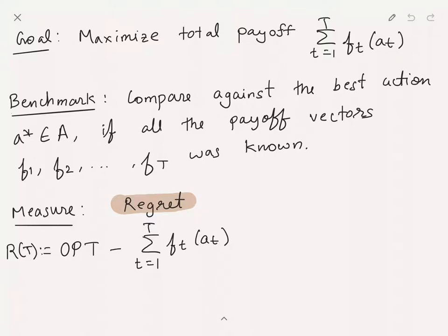Our goal is to design an online system — possibly adaptive to the inputs and randomized — such that the total payoff it receives, which is the sum over all time steps of F_T of the chosen action A_T, is maximized. We want to maximize the total payoff.